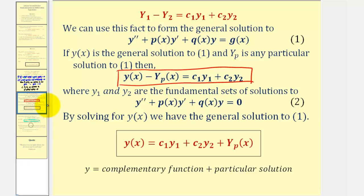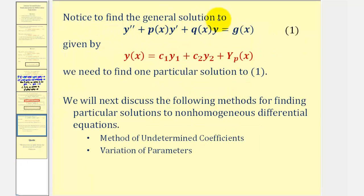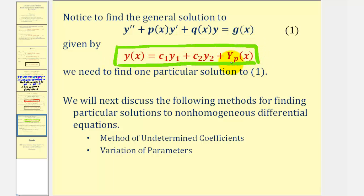To summarize: in order to find the general solution to a linear second order non-homogeneous differential equation, the general solution will be in this form, which means we'll need to find one particular solution to the non-homogeneous differential equation. In the next lesson, we'll discuss the following methods for finding particular solutions: the method of undetermined coefficients and the method of variation of parameters.